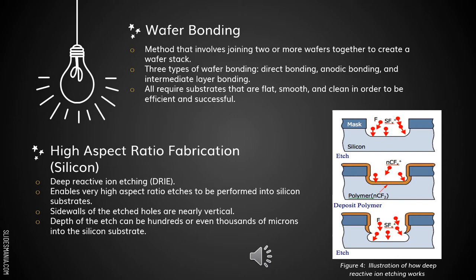For the last method, which is high aspect ratio fabrication using silicon: the first process is deep reactive ion etching, DRIE. It enables very high aspect ratio edges to be formed into silicon substrates. The sidewalls of the etched hole are nearly vertical, and the depth of the etch can be hundreds or even thousands of microns into the silicon substrates.